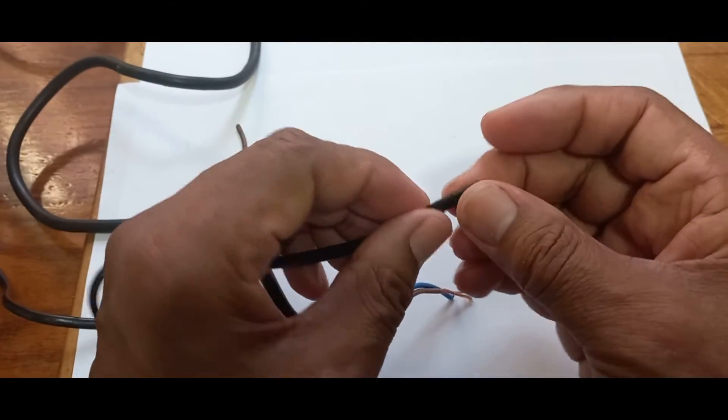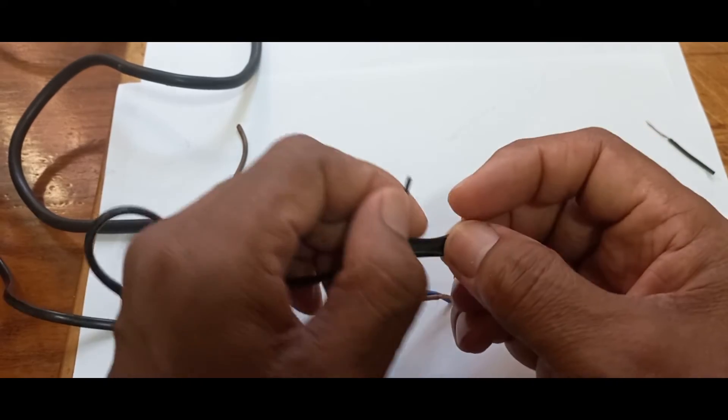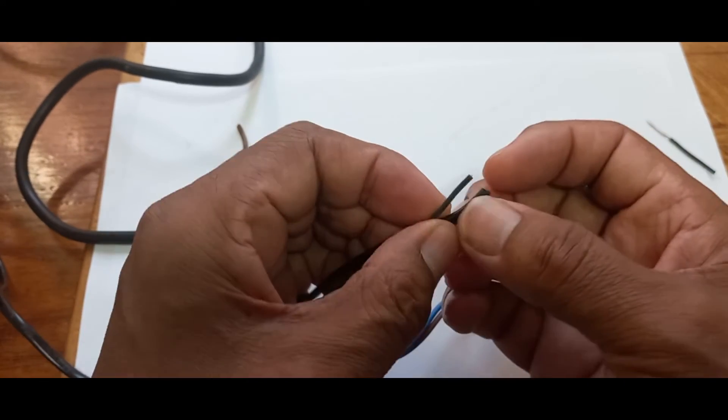So what I'm going to do is, here is a thinner piece of wire. You can see this piece of cable has two thin pieces of wire. In itself,